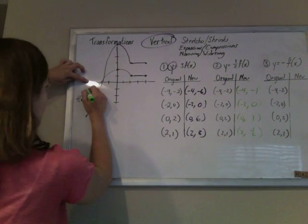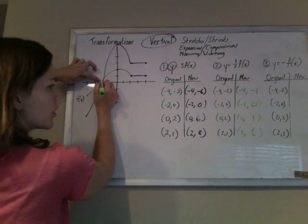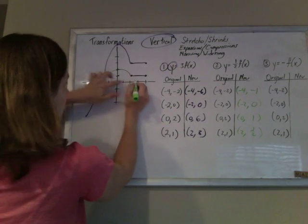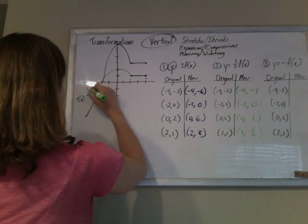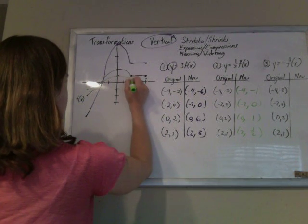So, negative 4, negative 1, negative 2, 0, 0, 1, 2, 1 half. This guy has the same y values, so that's nice to see. So we've got this, this, and that.